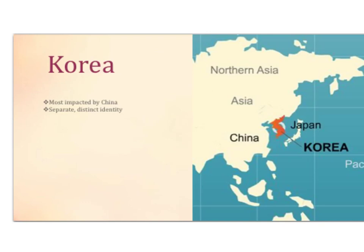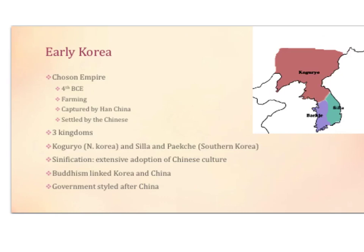Now we're moving to Korea. Korea was most impacted by China; however, it also created a separate, distinct identity. Look at the map and notice where Korea is in relation to China, and also how close it is to Japan. Early Korea began with the Joseon Empire in the 4th century BCE. It had a lot of farming and was captured by Han China and settled by the Chinese. It was broken into three kingdoms: Goguryeo, Baekje, and Silla. This led to Sinification — the extensive adoption of Chinese culture. Korea was modeled very similarly to China, Buddhism is linked to Korea and China, and the government is styled after China. This is why Korean culture is so similar to China.